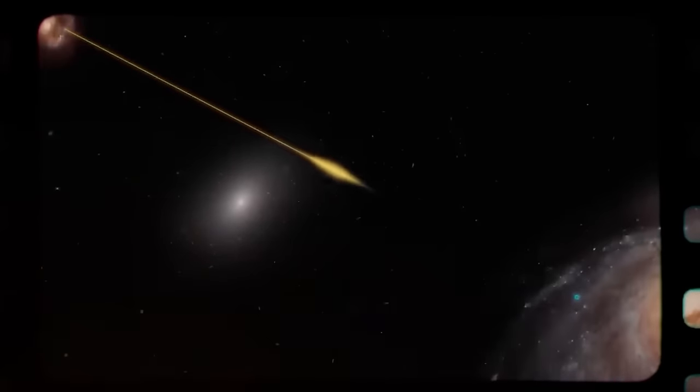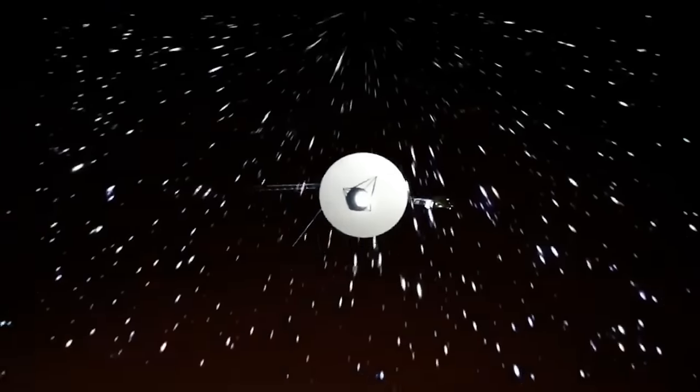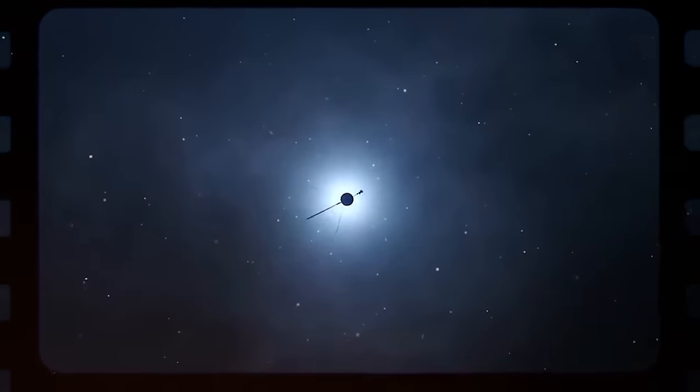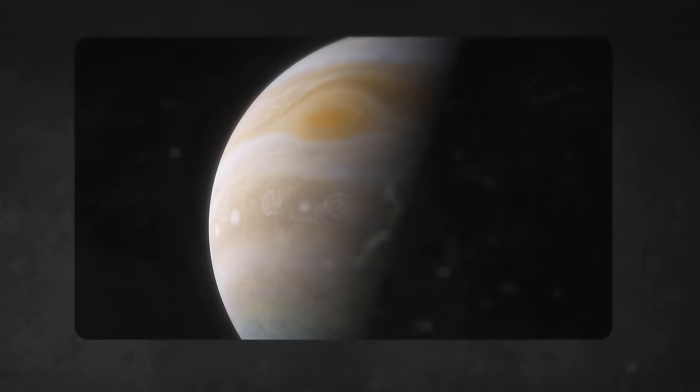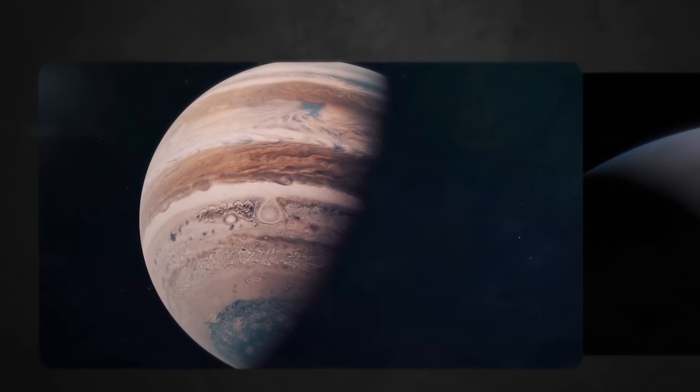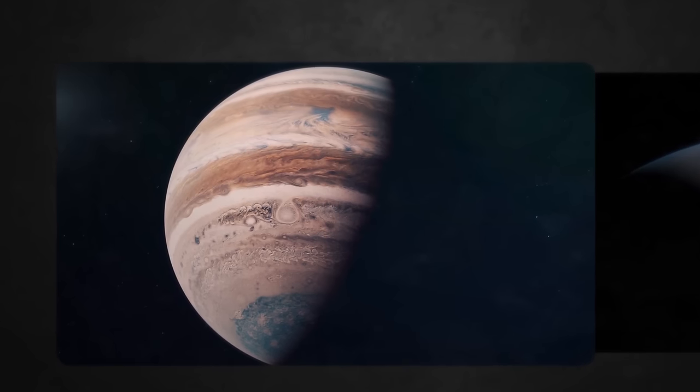With the probe nearing the end of its days, it's only ideal to recap its enigmatic wonders and discoveries, starting from the late 1970s when it first flew by Jupiter. Voyager 1's flyby of Jupiter revealed several shocking details about the planet that scientists had earlier not known, such as the thin ring around the planet and two new moons, Thebe and Metis.